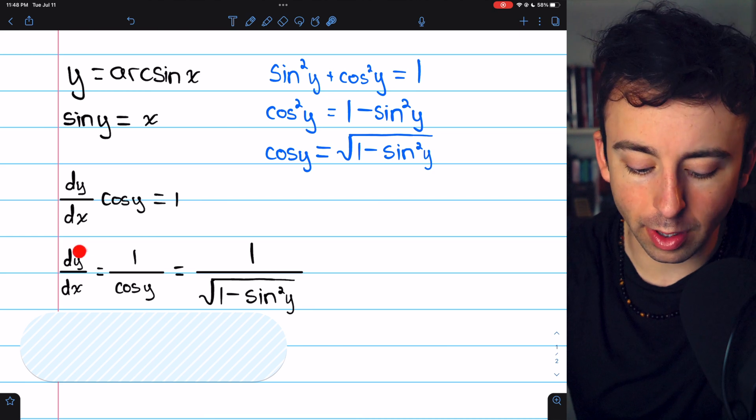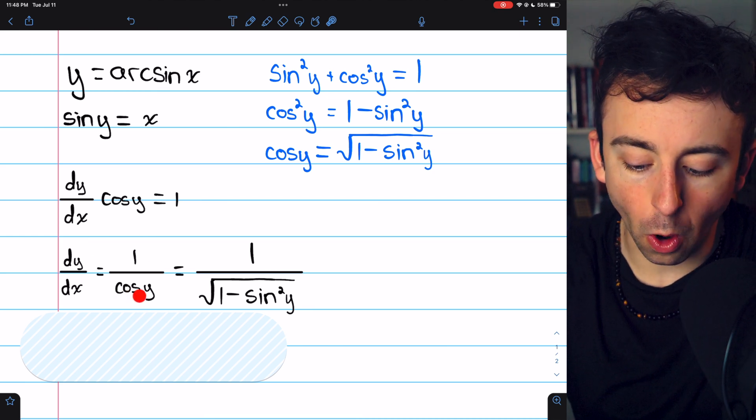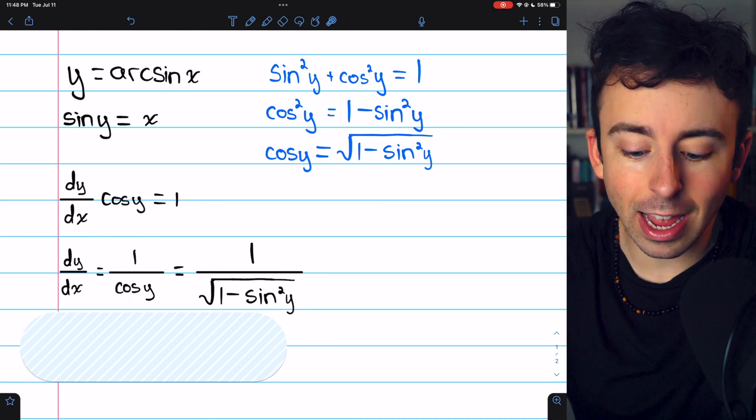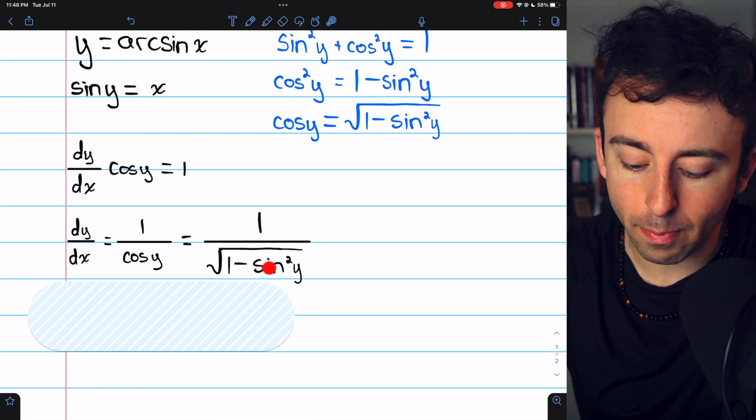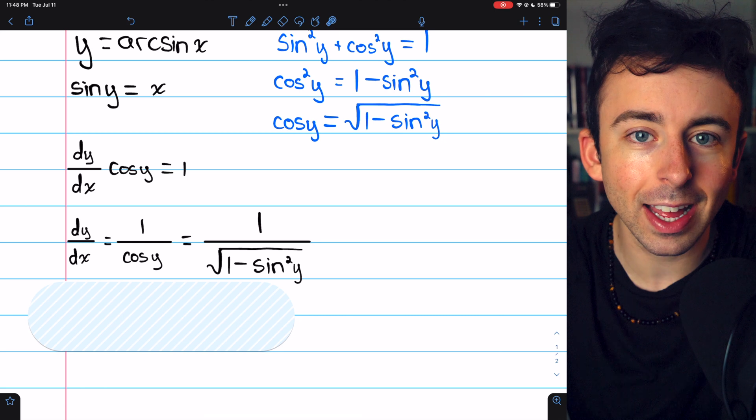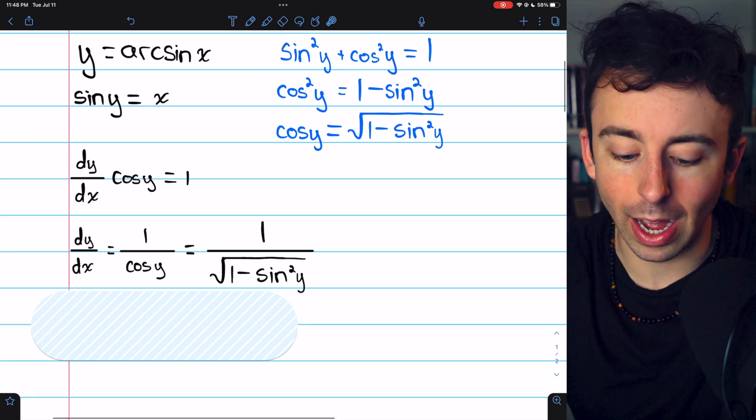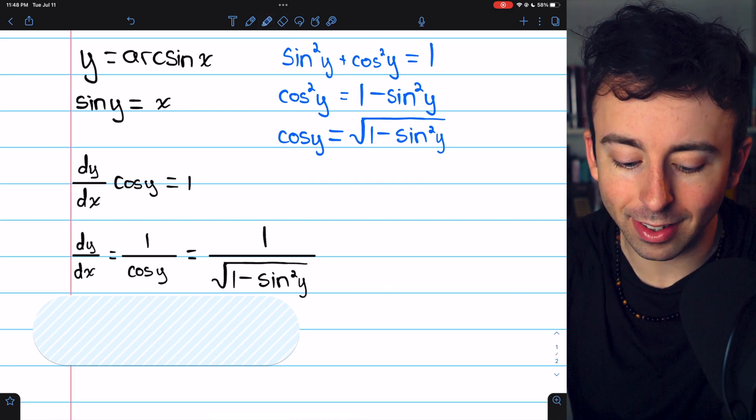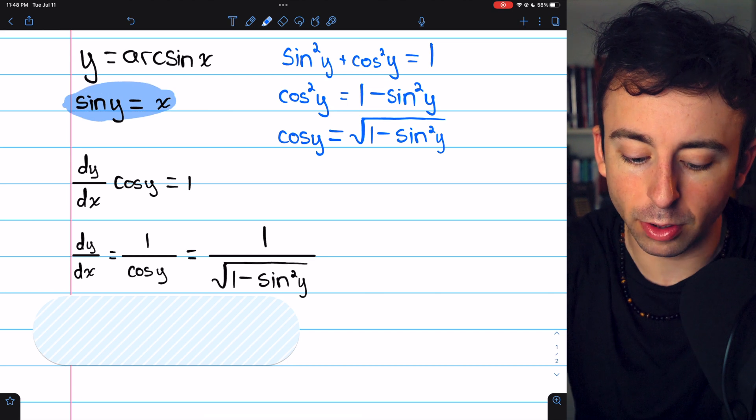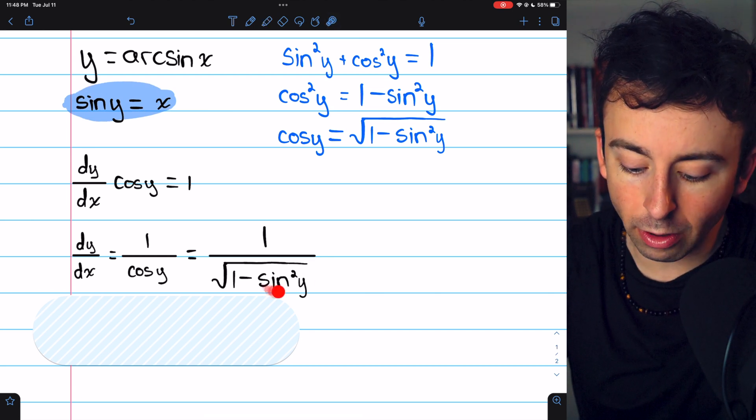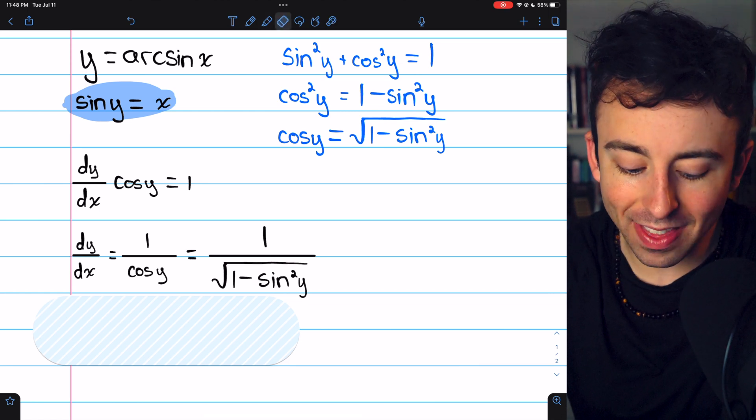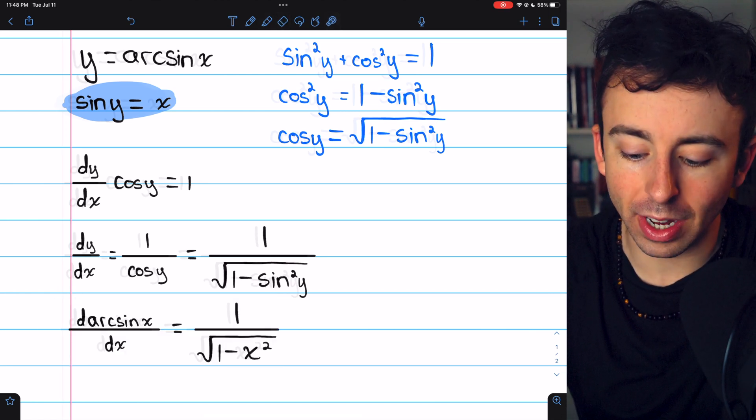So coming back to our derivative, 1 over cos(y) is the same as 1 divided by the square root of 1 - sin²(y), but sin(y), we know, is x. That was right in the beginning of our solution. Sine of y is x. So sin²(y) is x², and that gives us our final derivative.